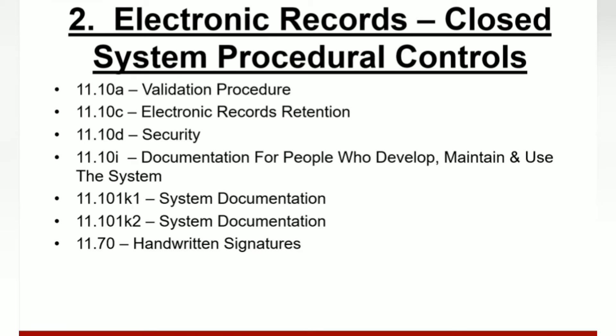The following documents provide validation documentation: system requirements document, detailed design specification document, computerized system validation decision form, validation plan, traceability matrix, installation qualification protocol, operational qualification protocol, performance qualification protocol, test failure reporting and resolution, installation qualification report, operational qualification report, performance qualification report, validation summary report, procedures, hardware and software installation procedures, and change control for hardware, software, and system documentation.